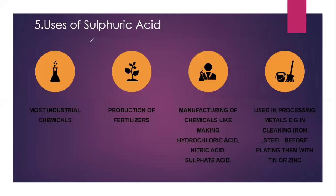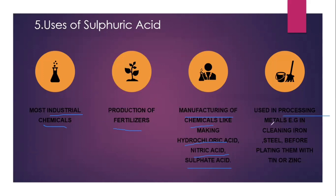We will see some of the uses of sulfuric acid. Sulfuric acid is one of the most important industrial chemicals, used in the manufacturing of fertilizers and important chemical compounds such as hydrochloric acid, nitric acid, and sulfurous acid. It is also used in the processing of metals, that is cleaning iron and steel before plating them with zinc or tin.